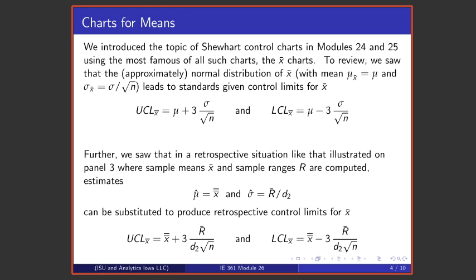When we introduced Shewhart control charting in Modules 24 and 25, we talked about X-bar charts being the most common and most famous type of Shewhart control chart. To review, we determined that if one is going to plot averages, the mean for an average is a process mean, and a standard deviation for an average is a process standard deviation over the square root of the sample size. That leads to these standards given control limits for X-bars.